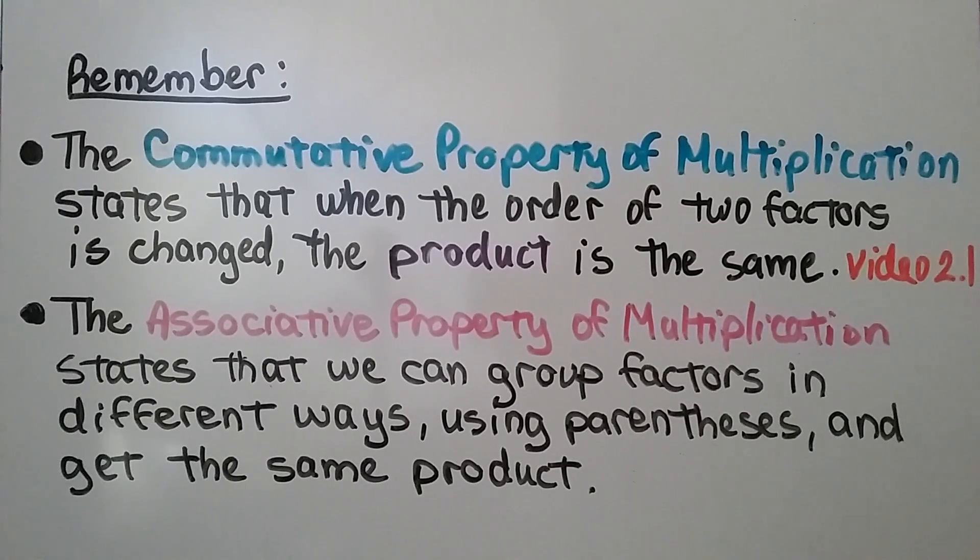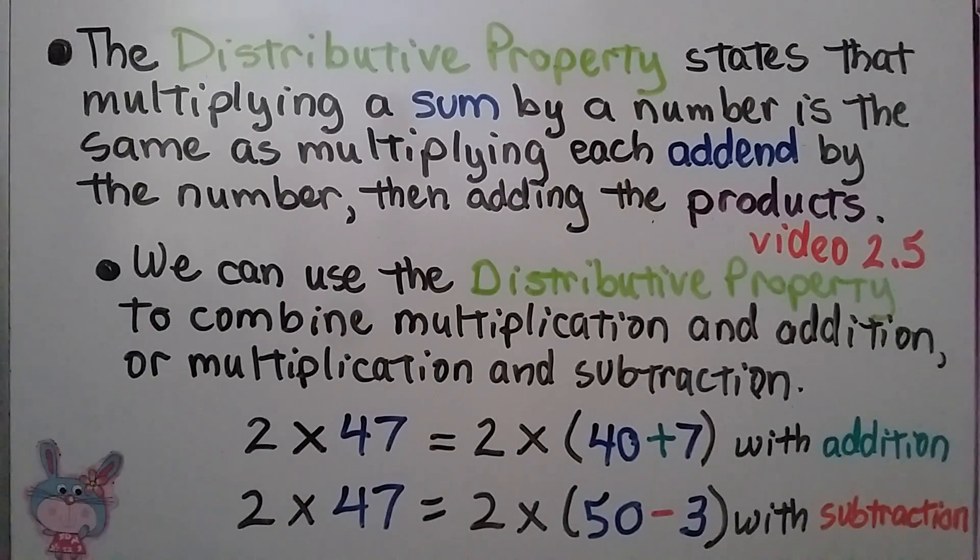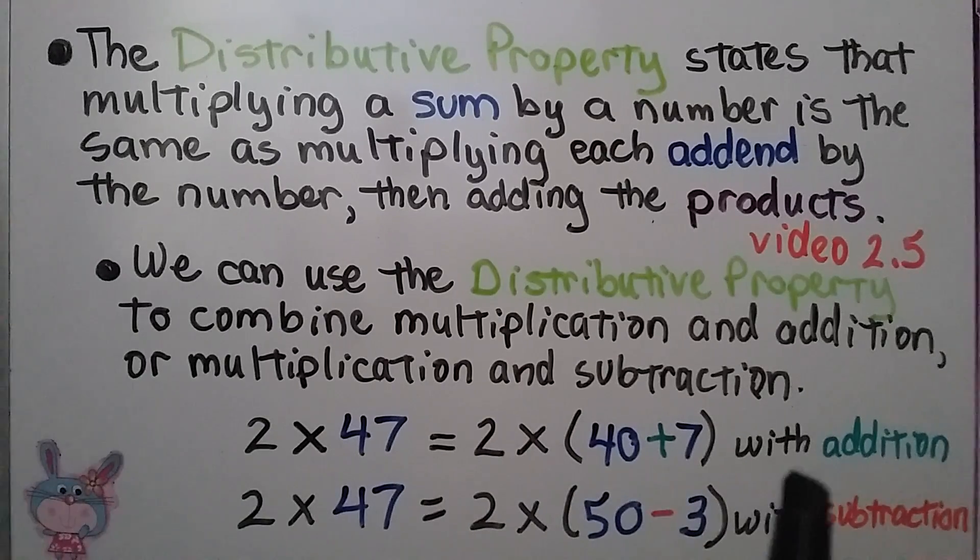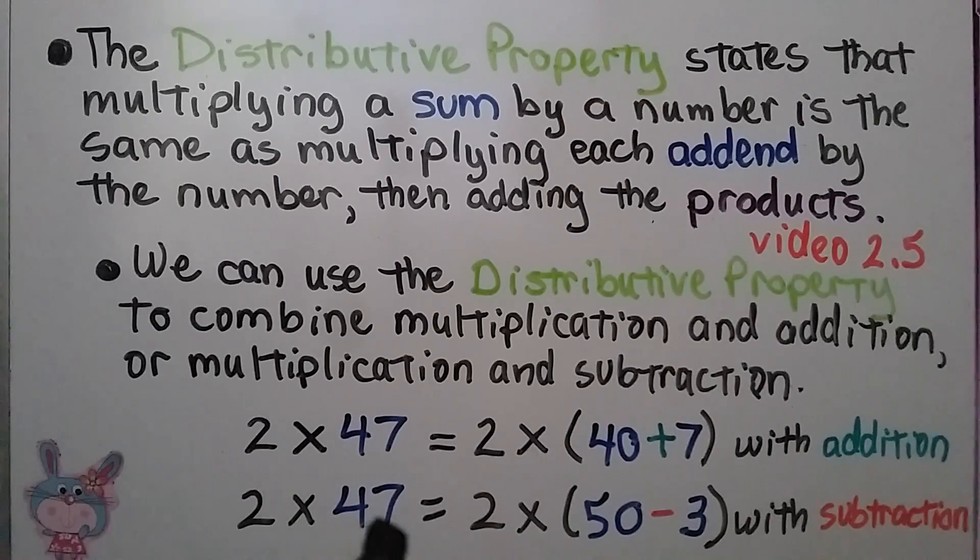The distributive property states that multiplying a sum, so that would be the 47 here, by a number is the same as multiplying each addend. So it'd be 40 plus 7 as addends, then we would just add the products. We can use the distributive property to combine multiplication and addition or multiplication and subtraction. If we have 2 times 47, we can do 2 times 40 plus 7 to use it with addition. We can also think of 2 times 47 as 50 minus 3 and do 2 times 50 minus 3 to use it with subtraction.